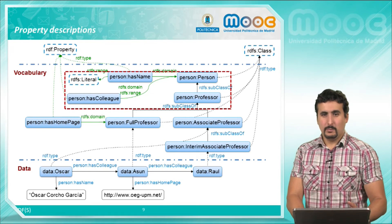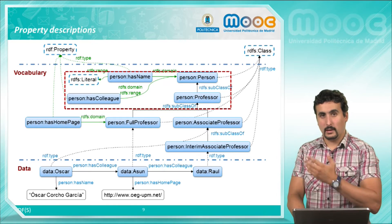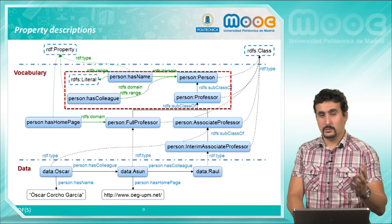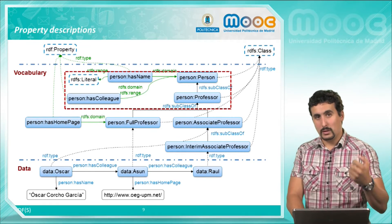The HasCollege property has the same range and domain in this case, which is a person. Meaning that it relates a resource representing a person belonging to a class person to another one belonging to the same class.